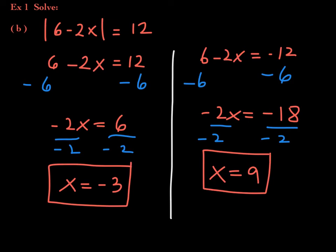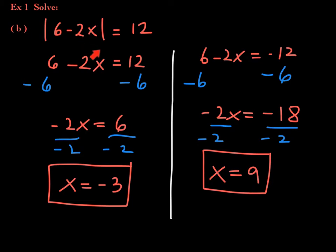These are the two numbers that satisfy this equation. If you plug in negative 3 for x, the expression on the left-hand side will equal 12. Same thing for 9 — if you plug in 9, the whole left-hand side will equal 12.